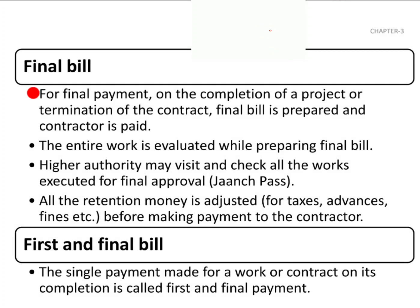For the final payment on the completion of the project or termination of the contract, a final bill is prepared and the contractor is paid. The entire work is evaluated while preparing the final bill, and a higher authority may visit to inspect all the works executed for final approval. All the retention money is adjusted for taxes, advances, funds, etc., when making payment to the contractor.